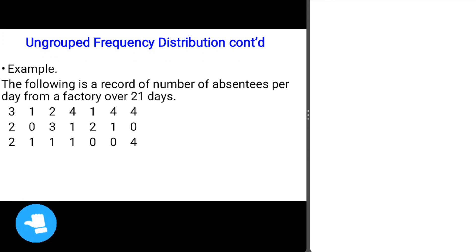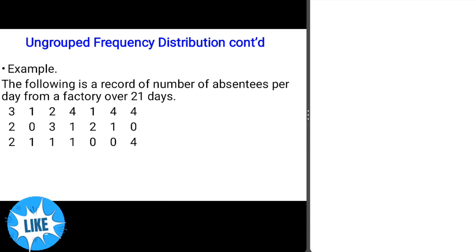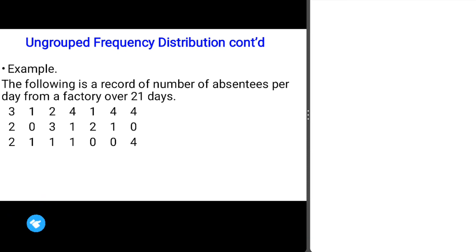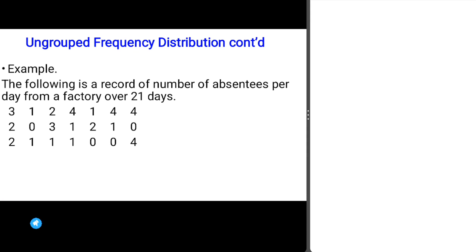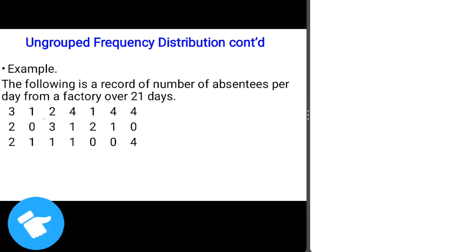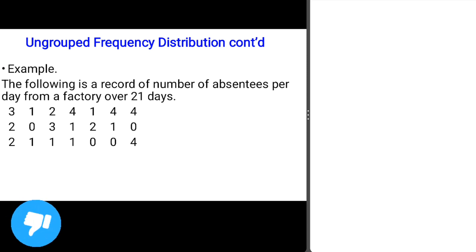Example one: the following is a record of the number of absentees per day in a factory over 21 days. We want to present this ungrouped data in an ungrouped frequency distribution table. The first step is to identify the least and highest values. The least value is zero and the highest is four.